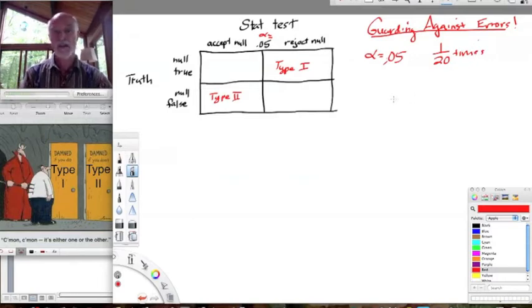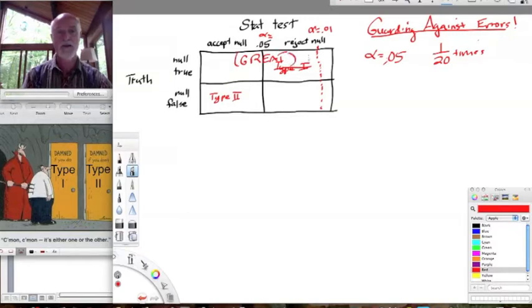So this suggests one immediate way we can guard against type 1 errors. We could solve that problem really quickly. How about setting alpha lower? For example, if we set alpha at 0.01 and move this entire line over here so that these are no longer falling into this category, but they're falling into the great category. We are accepting the null, and the null is true much more often now. And we're rejecting the null when the null hypothesis is true only 1% of the time. So we can very easily reduce the amount of type 1 error to 1 out of 100 by simply setting alpha equals 0.01.